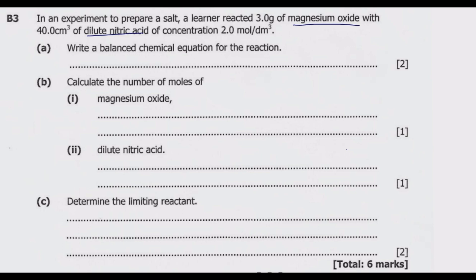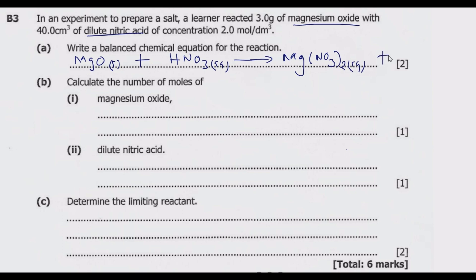Start with magnesium oxide, which is a solid, then we react it with nitric acid, which is aqueous. We are going to get a salt, which will be magnesium nitrate in aqueous solution, plus water, which will be liquid.